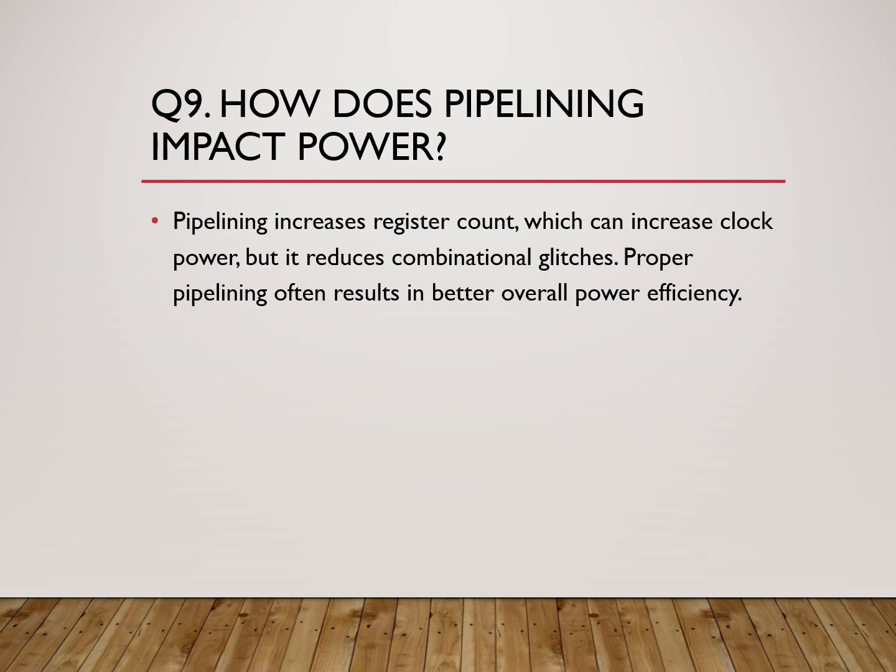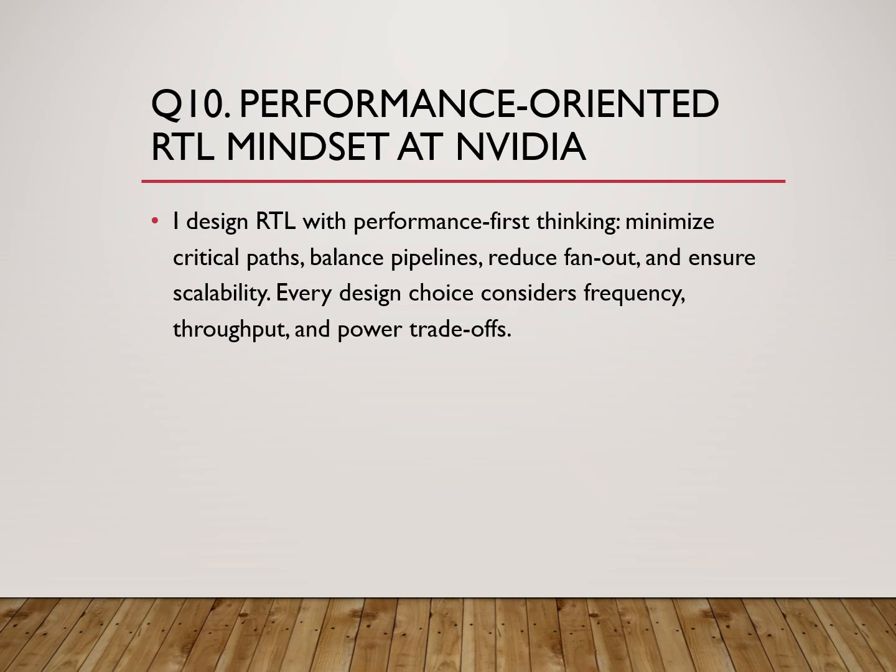How does pipelining impact power? Pipelining increases the number of registers, which increases clock power. However, it reduces combinational glitches and long transitions. If pipelining is done properly, the overall power can actually improve. At NVIDIA, designs are optimized for performance per watt, so pipelining decisions always consider power impact.